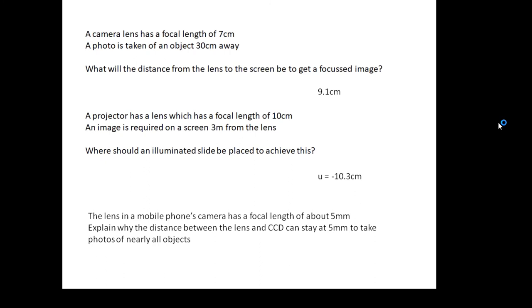The last one: the lens in a mobile phone's camera has a focal length of about five millimeters. Explain why the distance between the lens and CCD can stay the same—can stay at five millimeters—to take photos of nearly all objects. Well, basically the focal length is so small that every object is a distant object unless you actually get very very close to the object with your camera. Every object is a distant object compared to the focal length of the lens, therefore v will always be equal to f. If you like, 1 over v is 1 over u plus 1 over f. Well, if u is infinity, then 1 over u is 0.